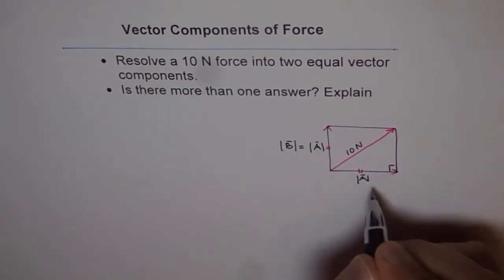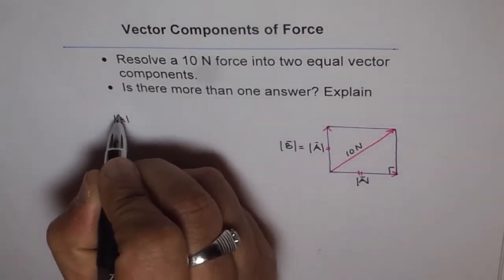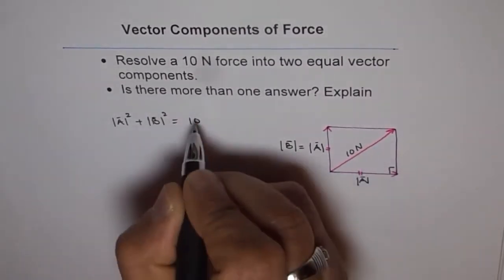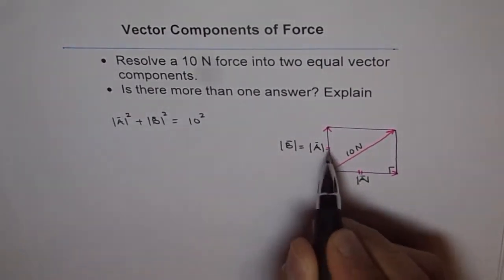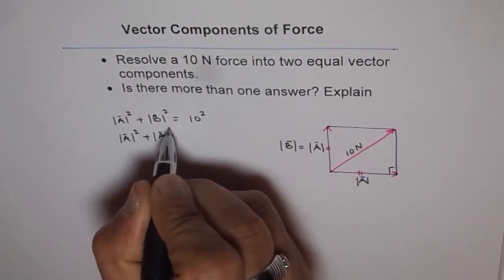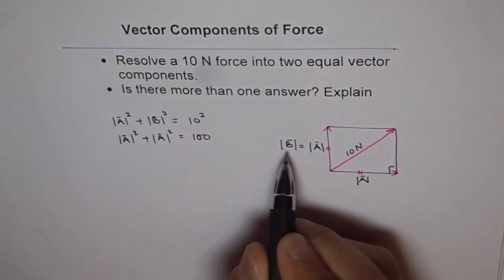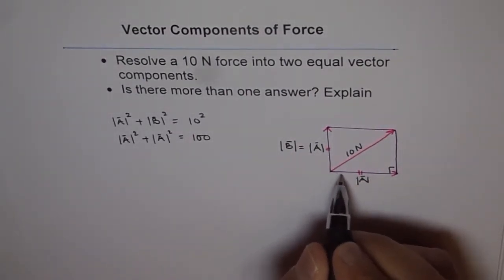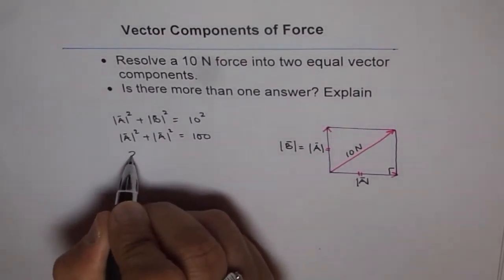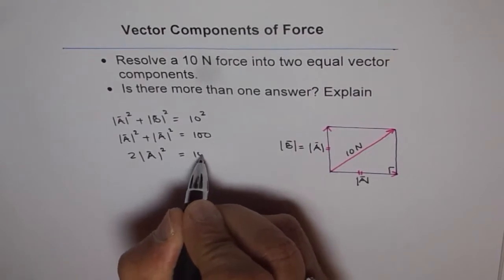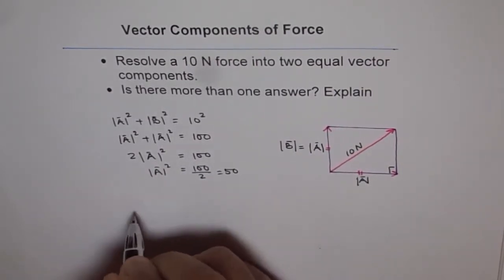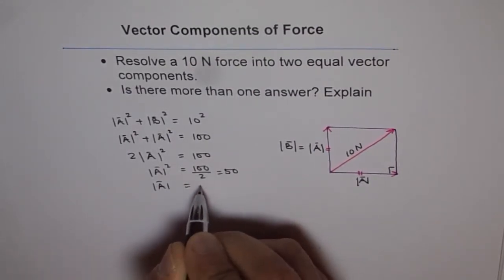As far as magnitudes are concerned, this is a right triangle, so we know: magnitude of A squared plus magnitude of B squared equals the magnitude of the diagonal squared, which is 10 squared = 100. Since these are the sides of a square, their magnitudes are the same. So we write this as 2 times magnitude of A squared equals 100, therefore magnitude of A squared is 100 divided by 2, which is 50, and magnitude of A is square root of 50.